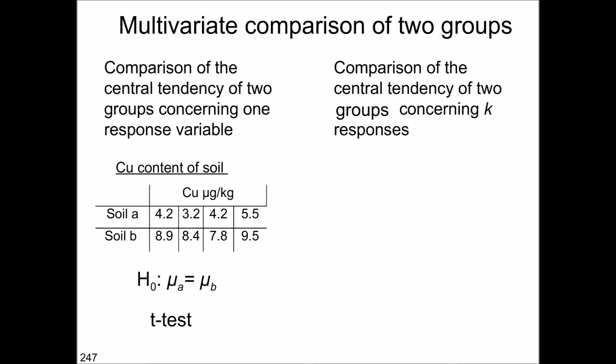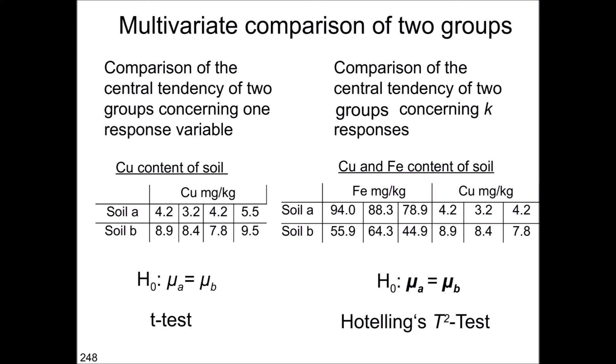In the multivariate case, we have two groups and we want to compare them concerning k responses. For example, you would have the copper and iron content of soils measured several times, and our hypothesis is that the soils are the same regarding these two response variables — or you could have several more response variables, but just two groups. This can be done with the Hotelling t-square test.